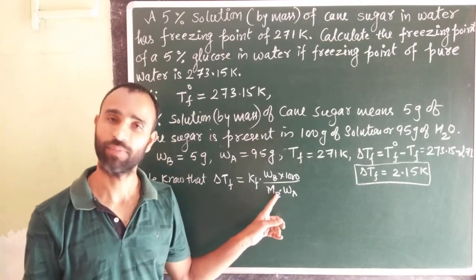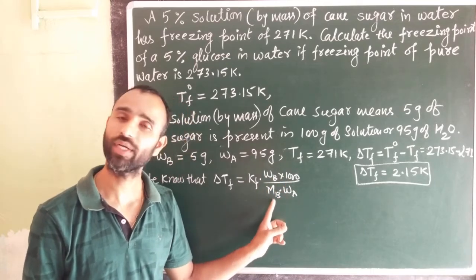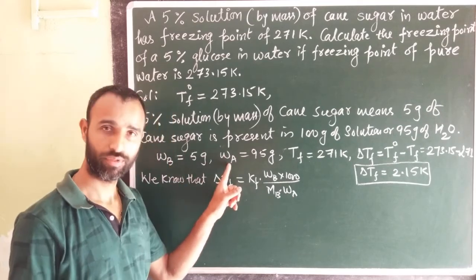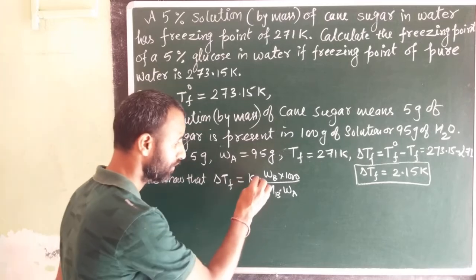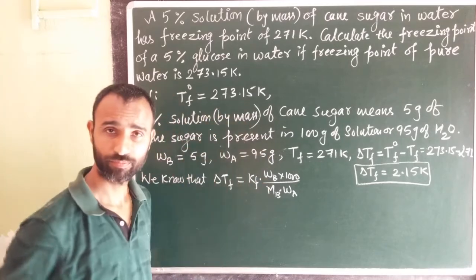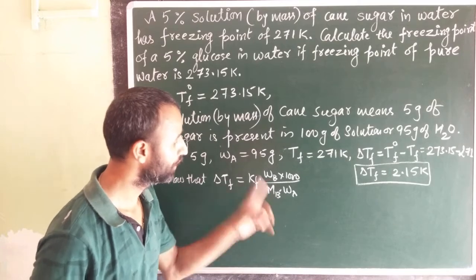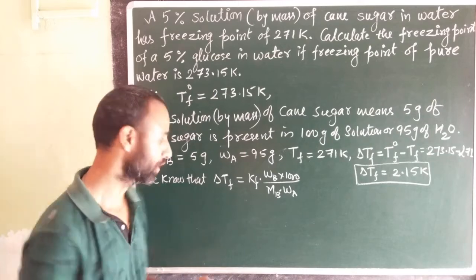WB and WA we have, delta Tf we have, Kf is not given, and MB we can get it from the formula of cane sugar.